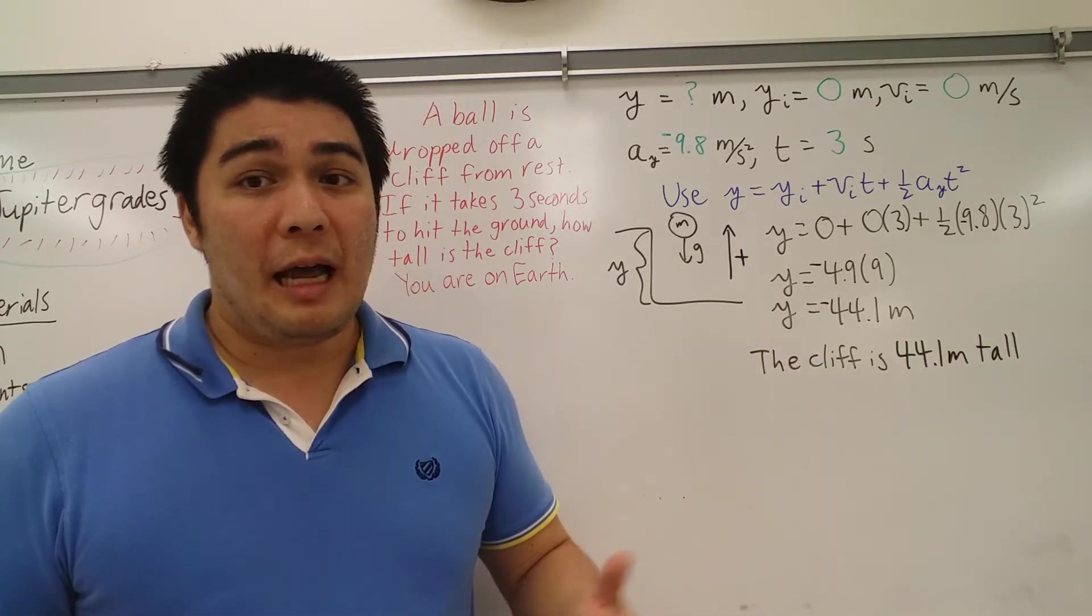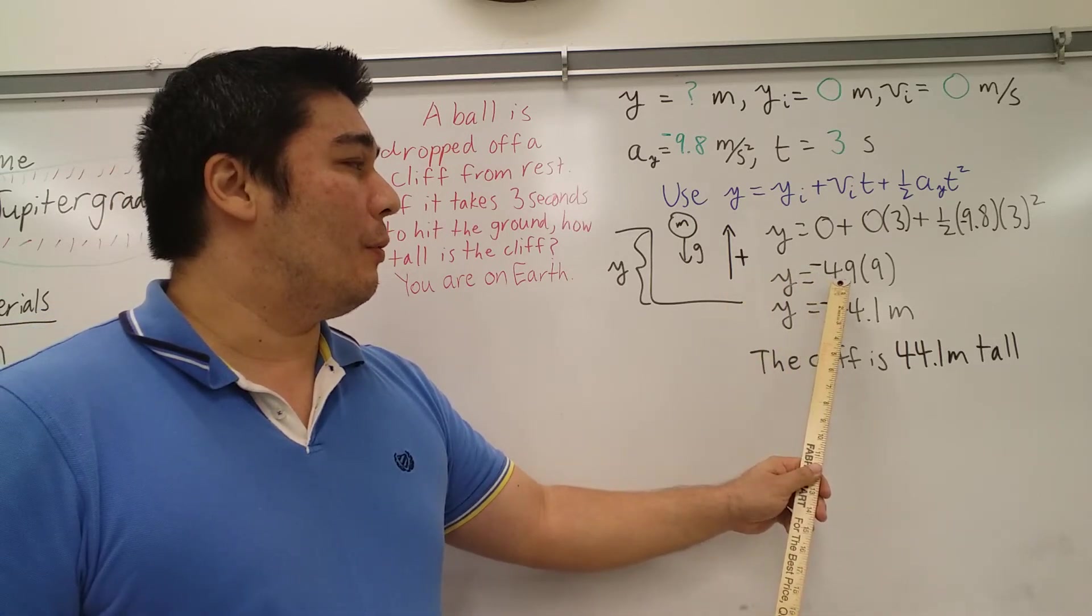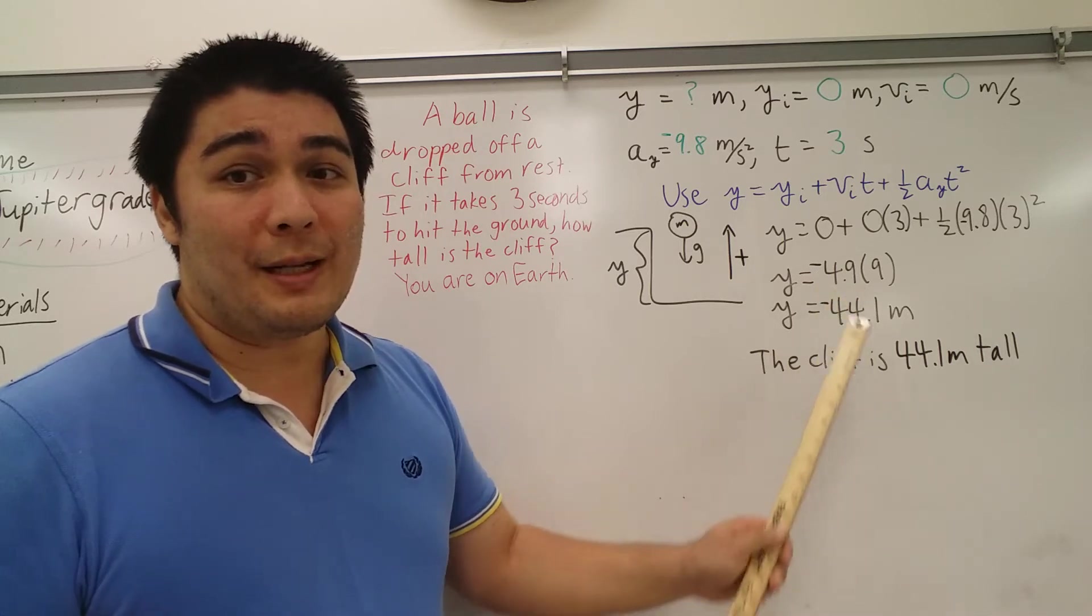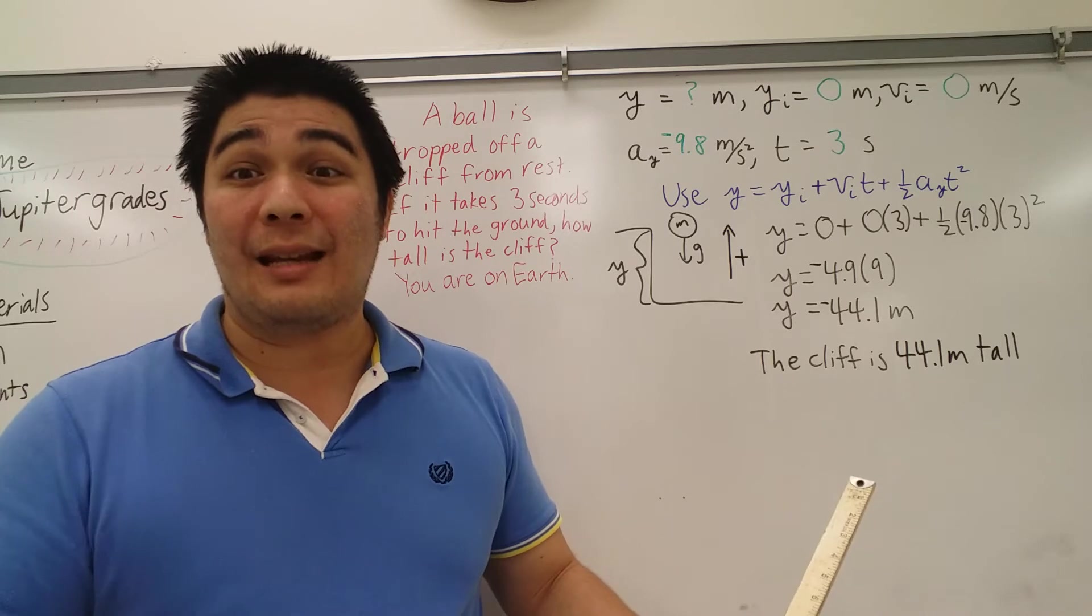Does this change much? As you can see, not really. All that happened was that one half times negative 9.8 is negative 4.9. And again, I did the exact same steps. I just have an extra negative in there.